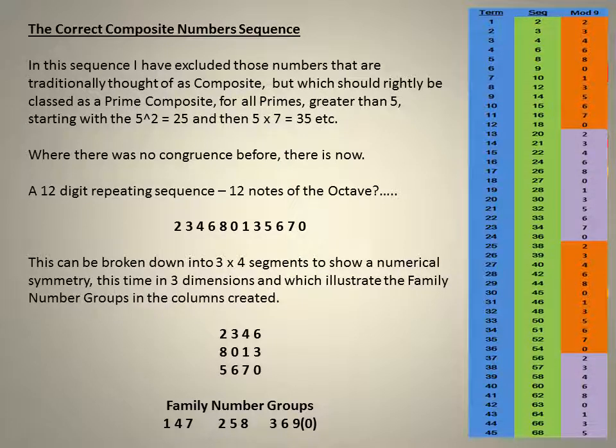OK, so here's the correct composite numbers sequence. In the sequence I've excluded those numbers that are traditionally thought of as composite, but which should rightly be classed as a prime composite, for all primes greater than 5, starting with 5 squared equals 25, and so on. Where there was no congruence before, there is now. Puts me in mind of 12 notes of the octave.